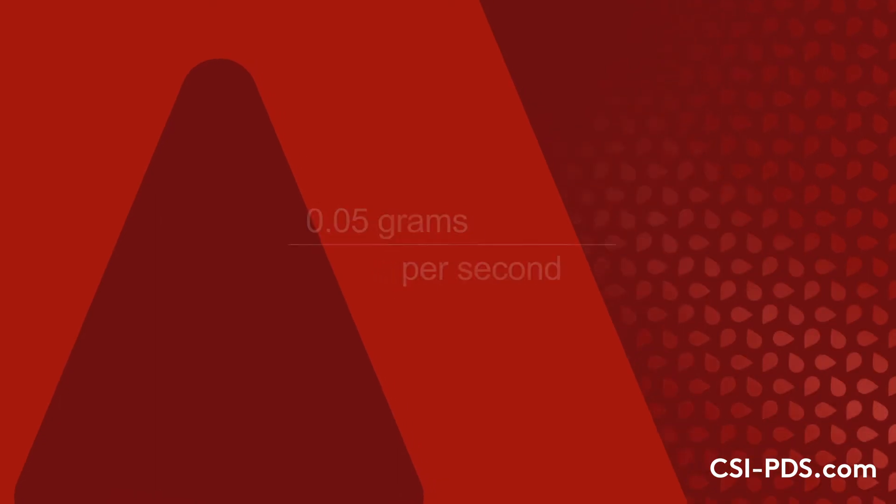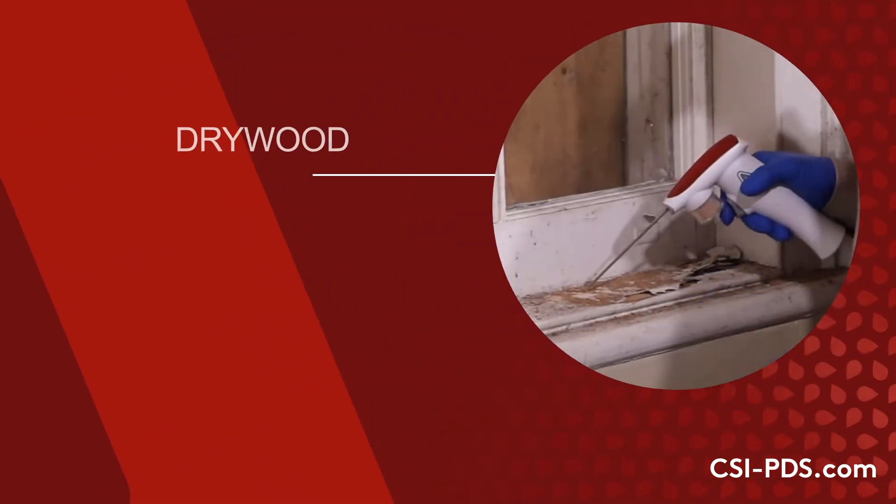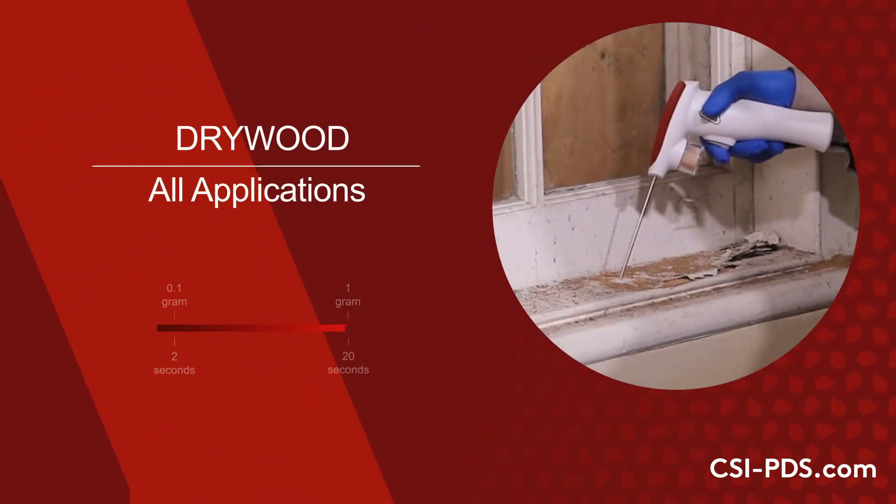For example, to make applications into drywood termite galleries, apply Taurus Dry using the PDS for 2 to 20 seconds.